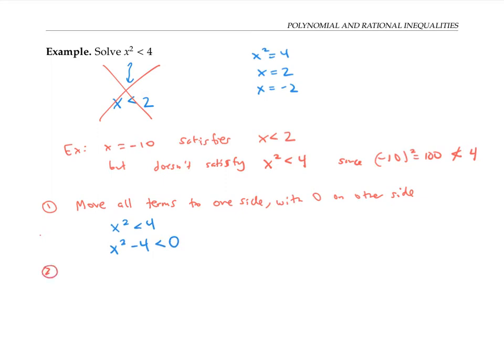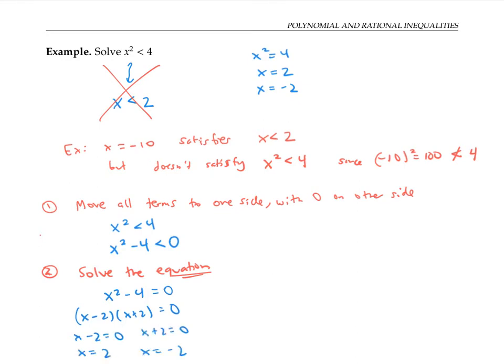Now I'm going to solve the associated equation: x squared minus four is equal to zero. I can do this by factoring to get x minus two times x plus two equals zero. Setting each factor equal to zero, I get x equals two and x equals negative two.